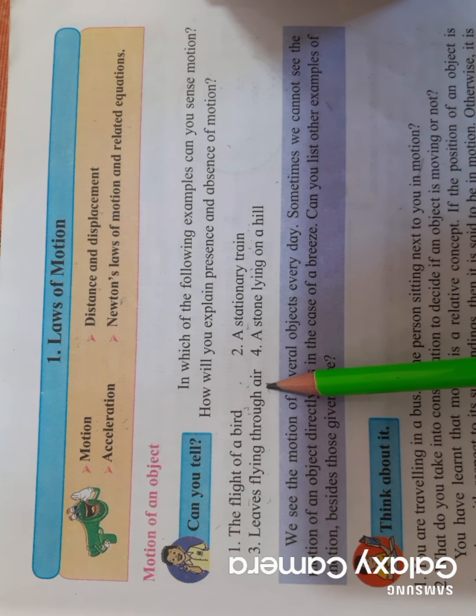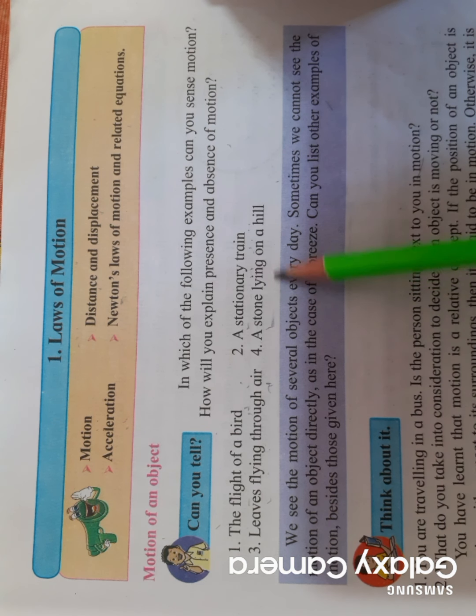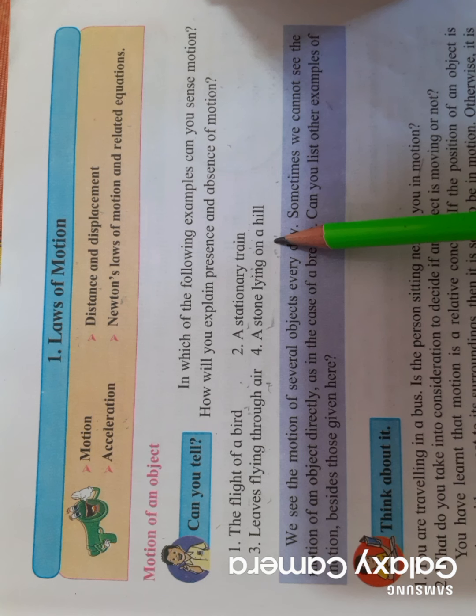Fourth example: a stone lying on a hill. A stone is there on the hill. If I see today, if I see tomorrow, that stone is going to be there only. Very obviously it is not in motion because it is not moving from that particular point.